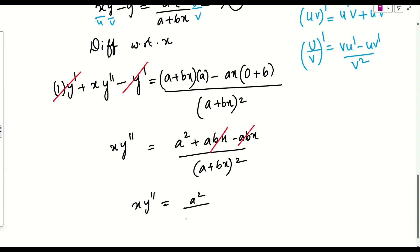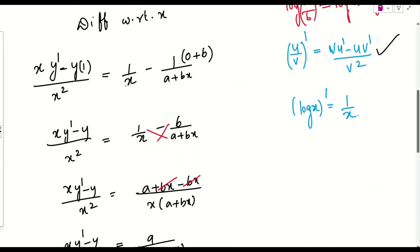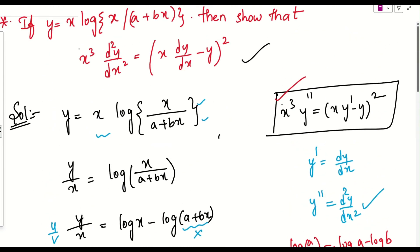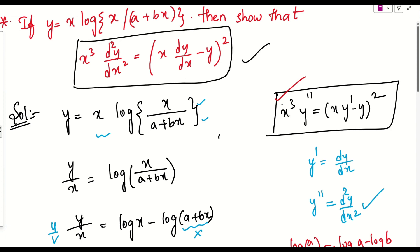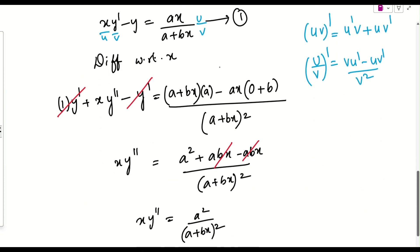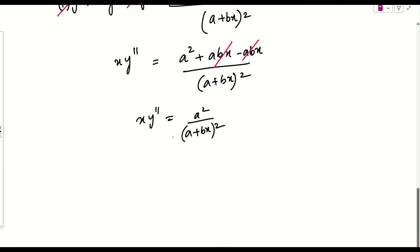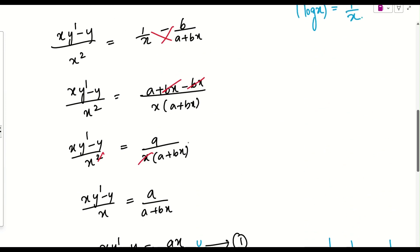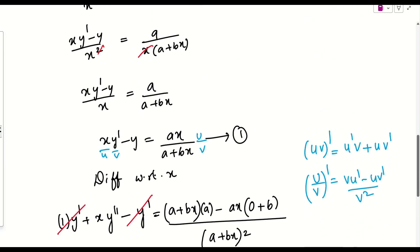We now have x·y'' = a²/(a+bx)². But to prove the final result, we need to eliminate a and b. Notice from Equation 1 that ax/(a+bx) = xy' − y, so a/(a+bx) = (xy' − y)/x.